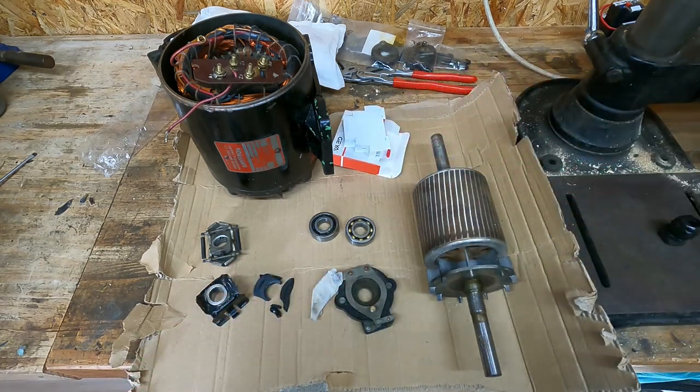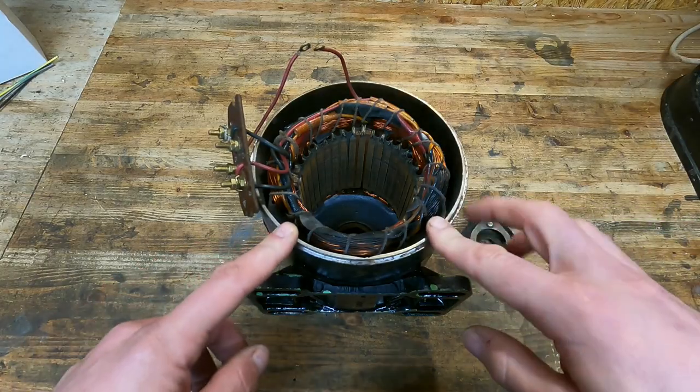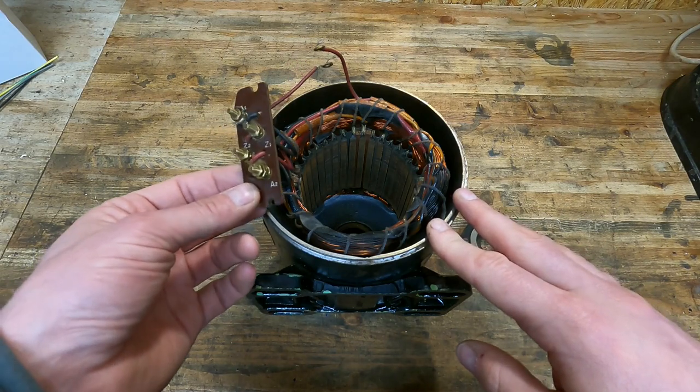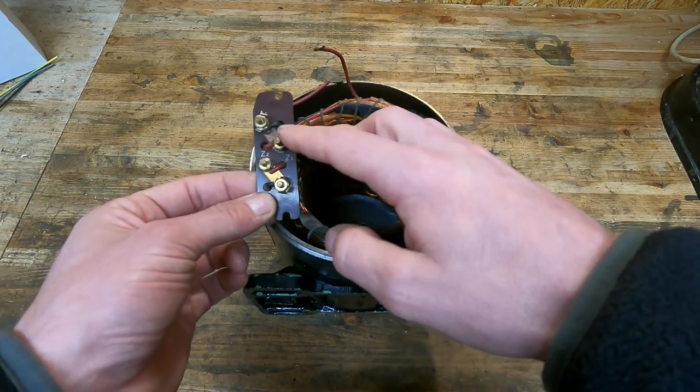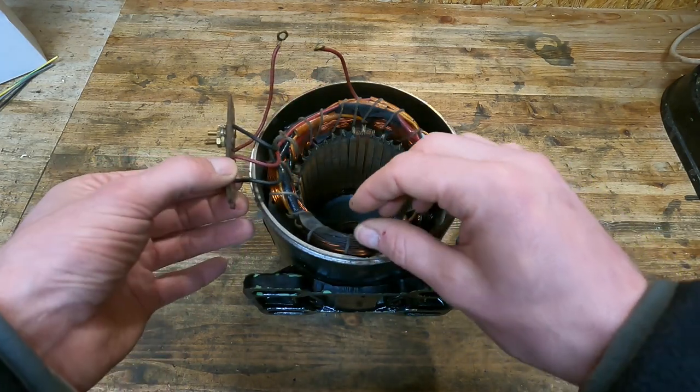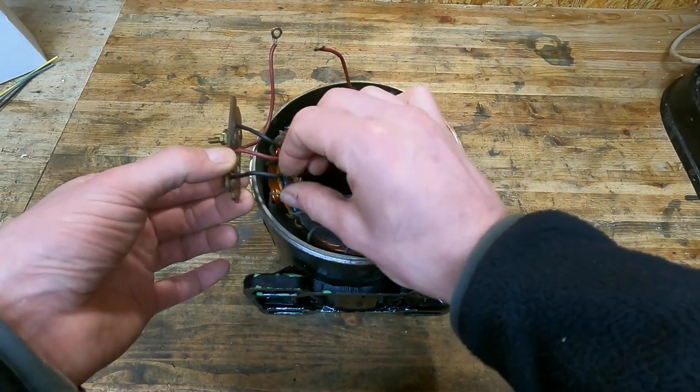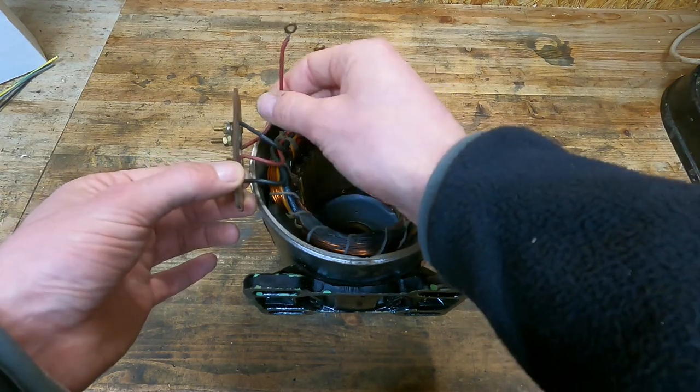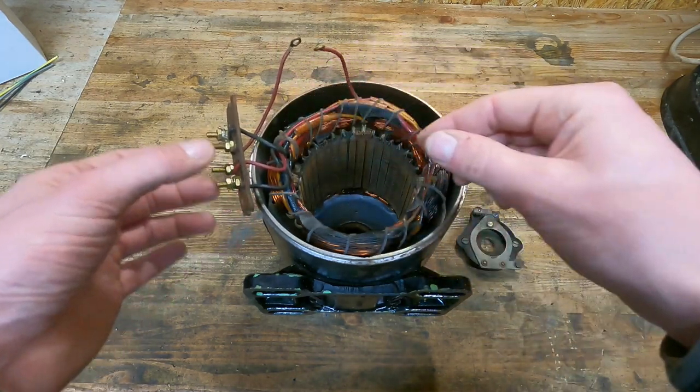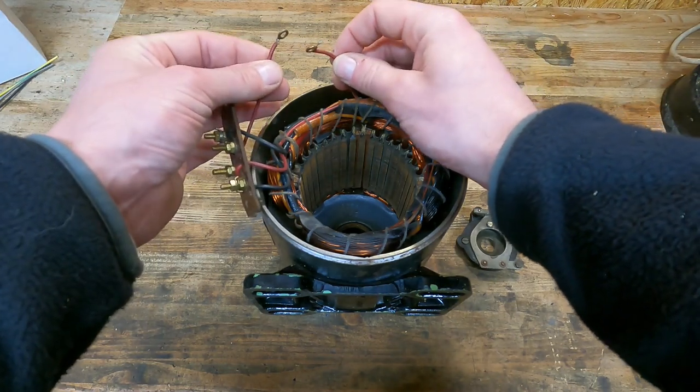This is a split-phase induction motor. It has two terminals on the terminal block: one for neutral and one for live. Each terminal has two cables attached to it—a black cable for the run winding and a red cable for the start winding.